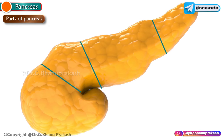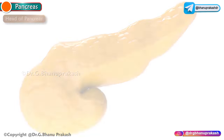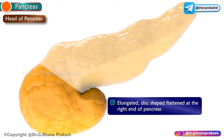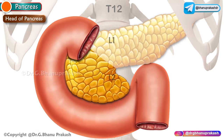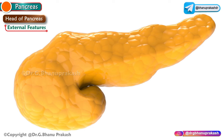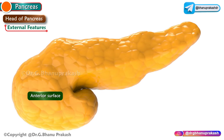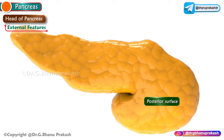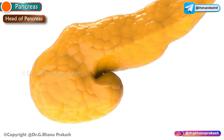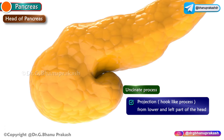The pancreas is divided into four parts: head, neck, body, and tail. The head is elongated and disc-shaped, flattened at the right end of the pancreas, and lies in the concavity of the C-shaped duodenal loop at the level of L2 vertebra. The head has three borders — superior, inferior, and lateral — two surfaces — anterior and posterior — and one process called the uncinate process.